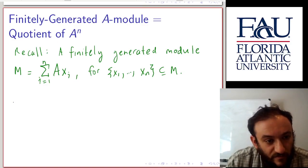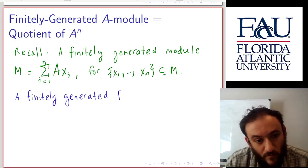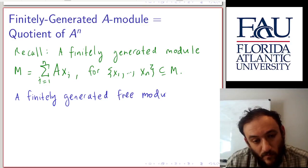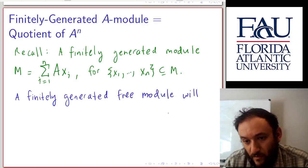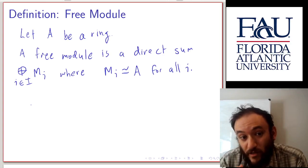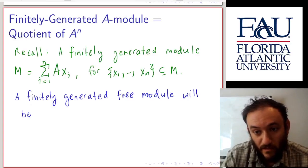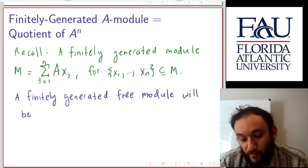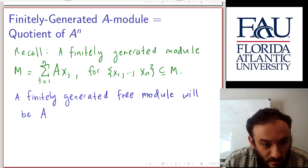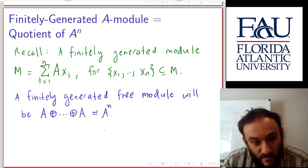A finitely generated free module will be of the form: looking at what freeness means, it can be written as a direct sum where each summand is isomorphic to the ring. So if it's also finitely generated, we can consider it as a direct sum of finitely many copies of A, or you can think of this as A^N.